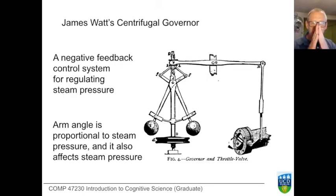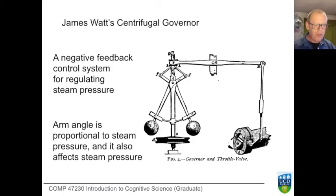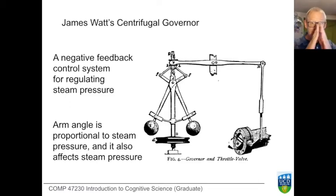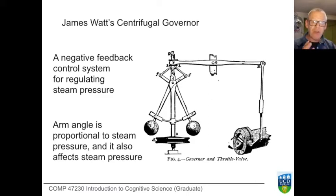As it spins, those arms go up, and as they go up, they open a valve which reduces the steam pressure. So they go down, so the pressure rises, so they go up — and they end up in a nice homeostatic balance in which steam pressure is maintained within limits.